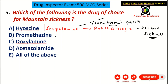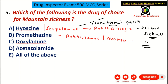Coming to the second choice, promethazine — promethazine is basically an anti-histamine. Its brand name is Avomin, and it is also given for motion sickness. Before traveling you can take Avomin or promethazine, which will prevent nausea and vomiting.